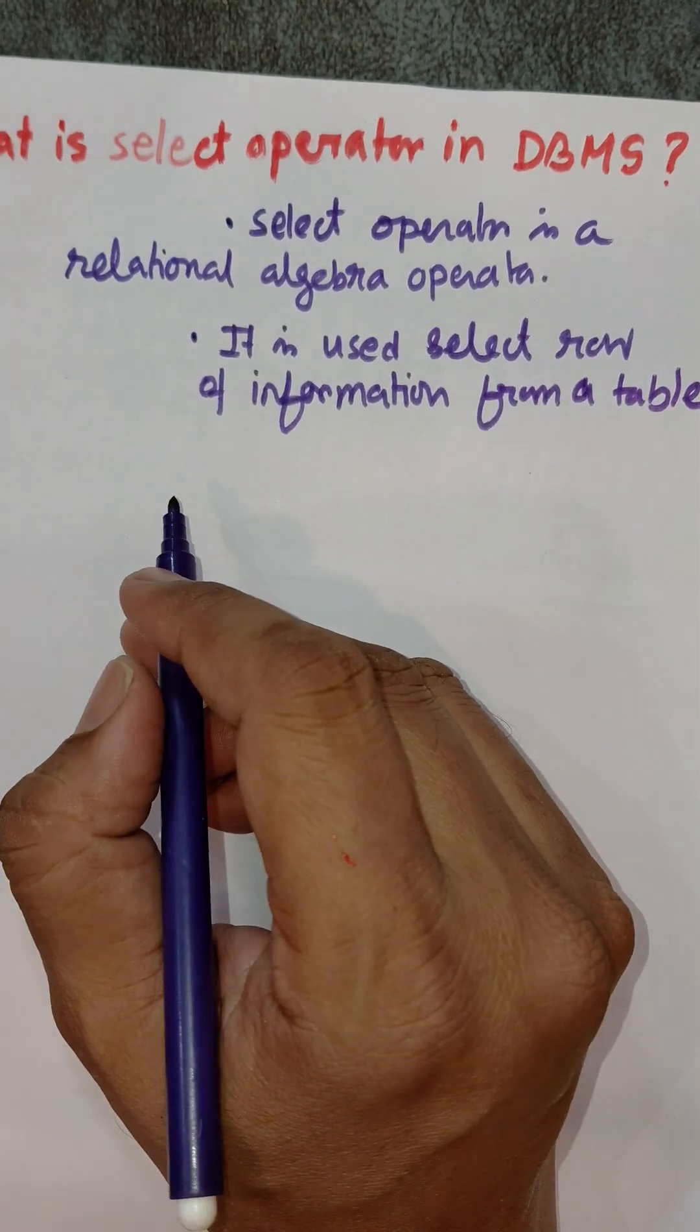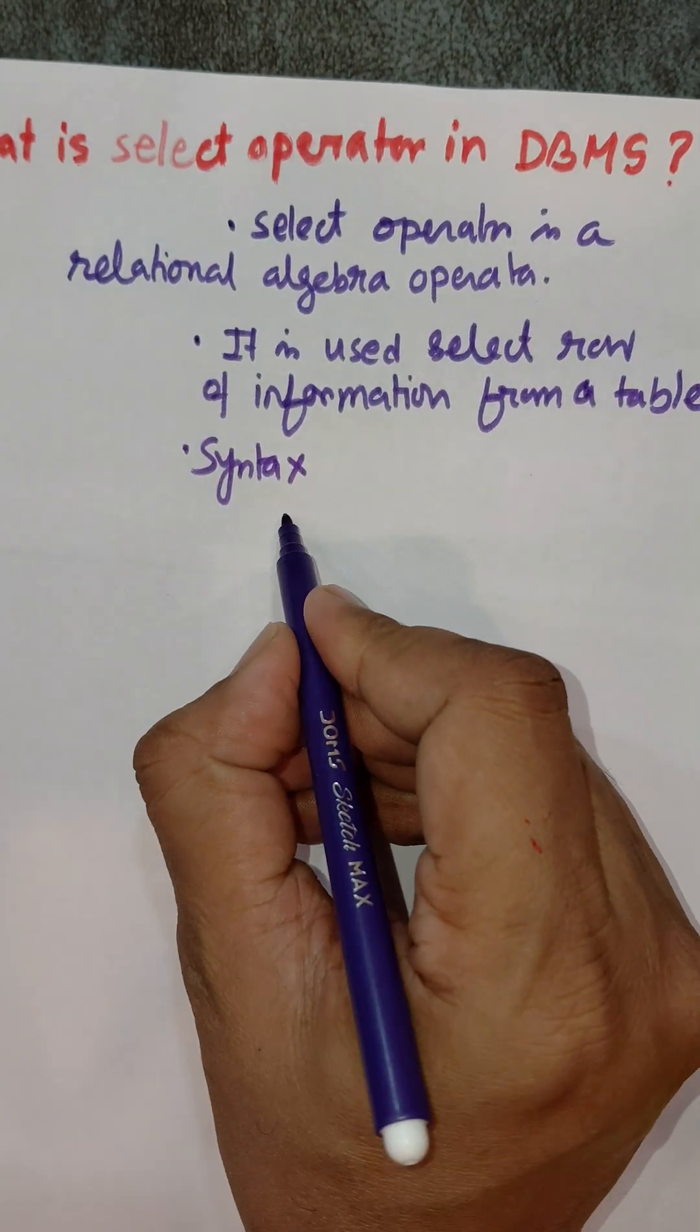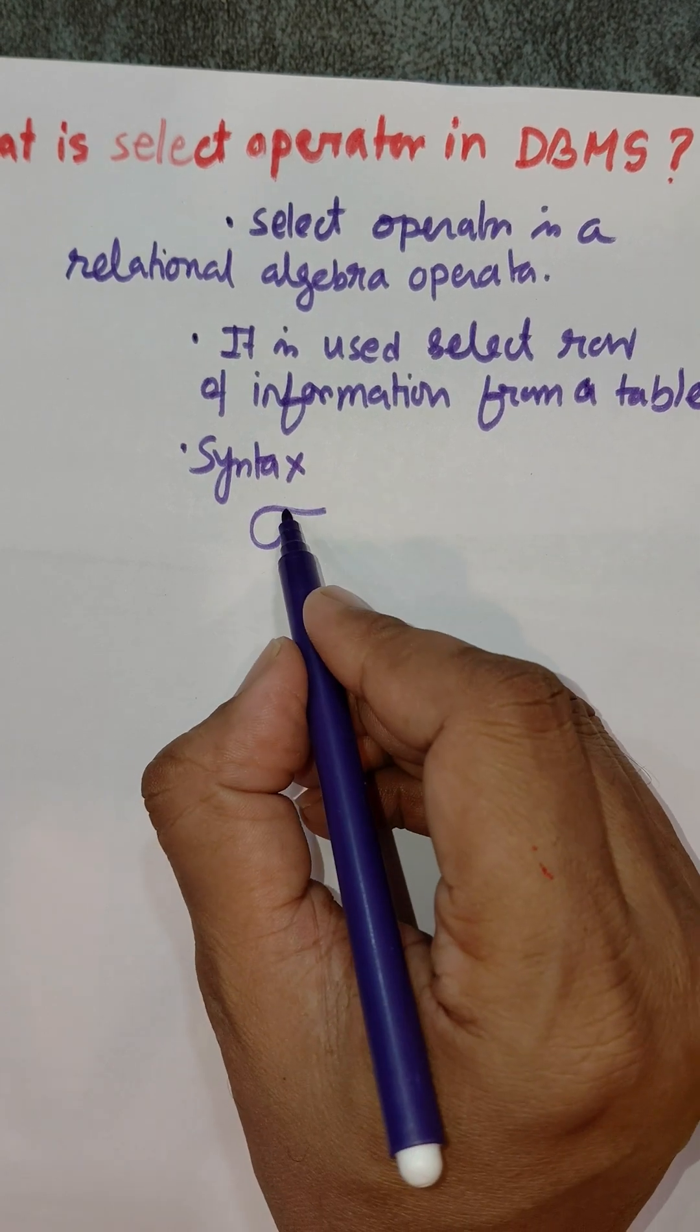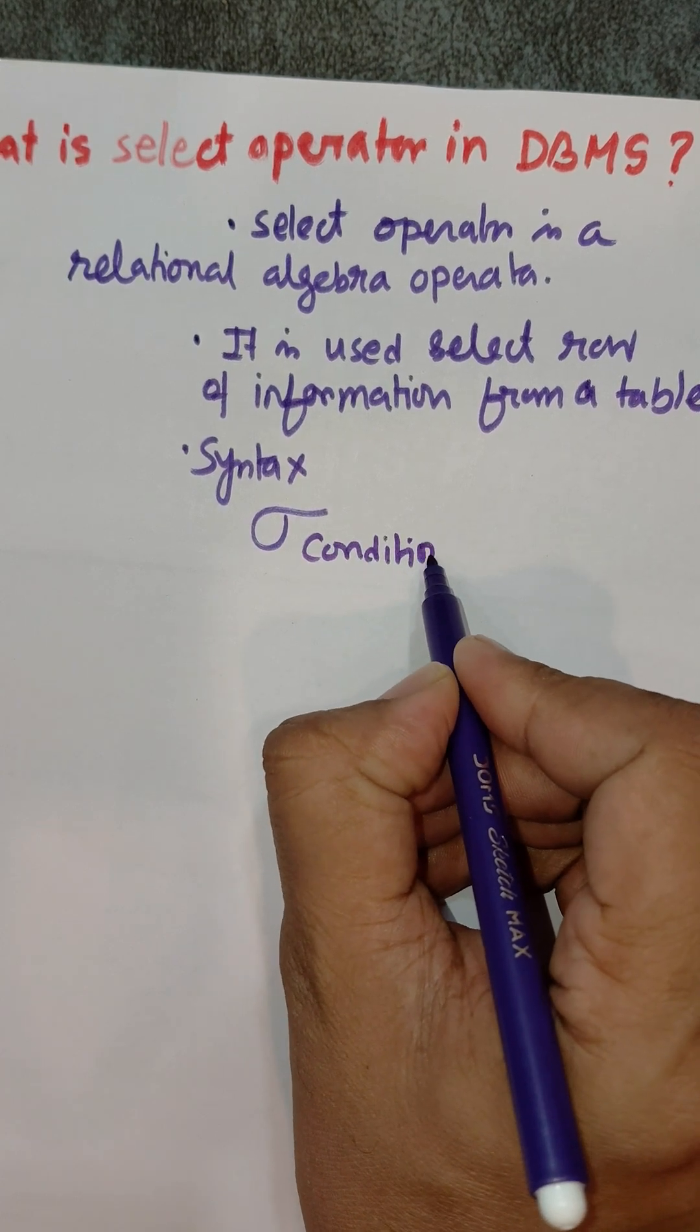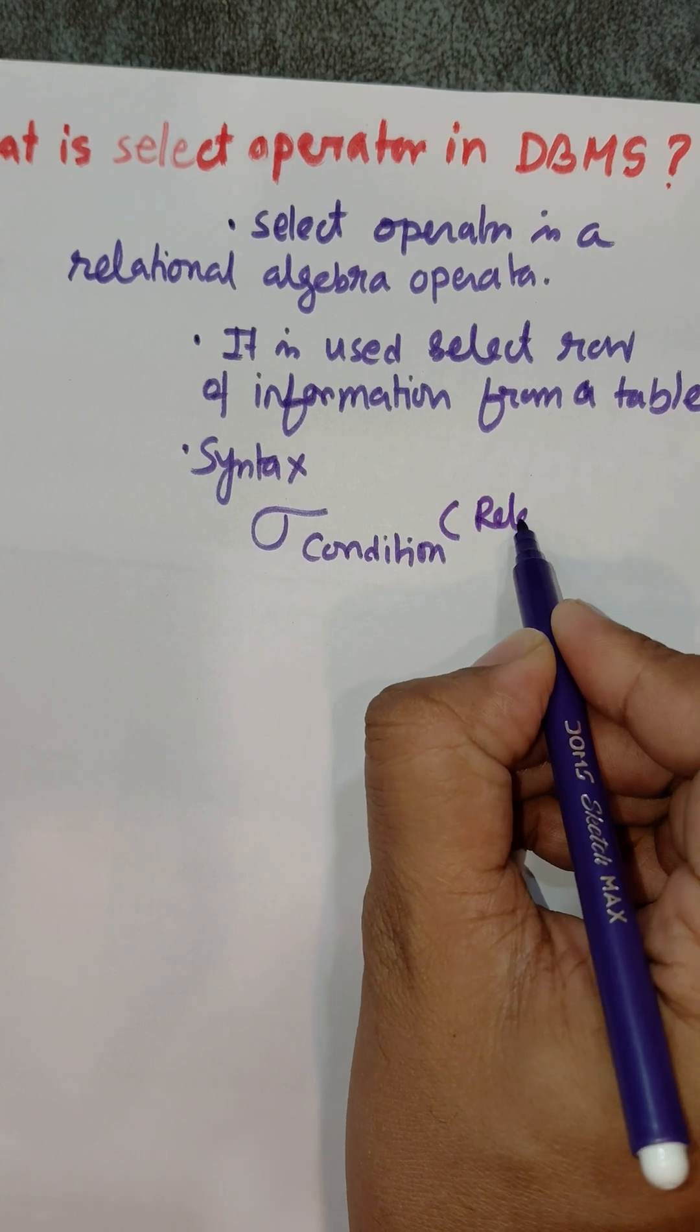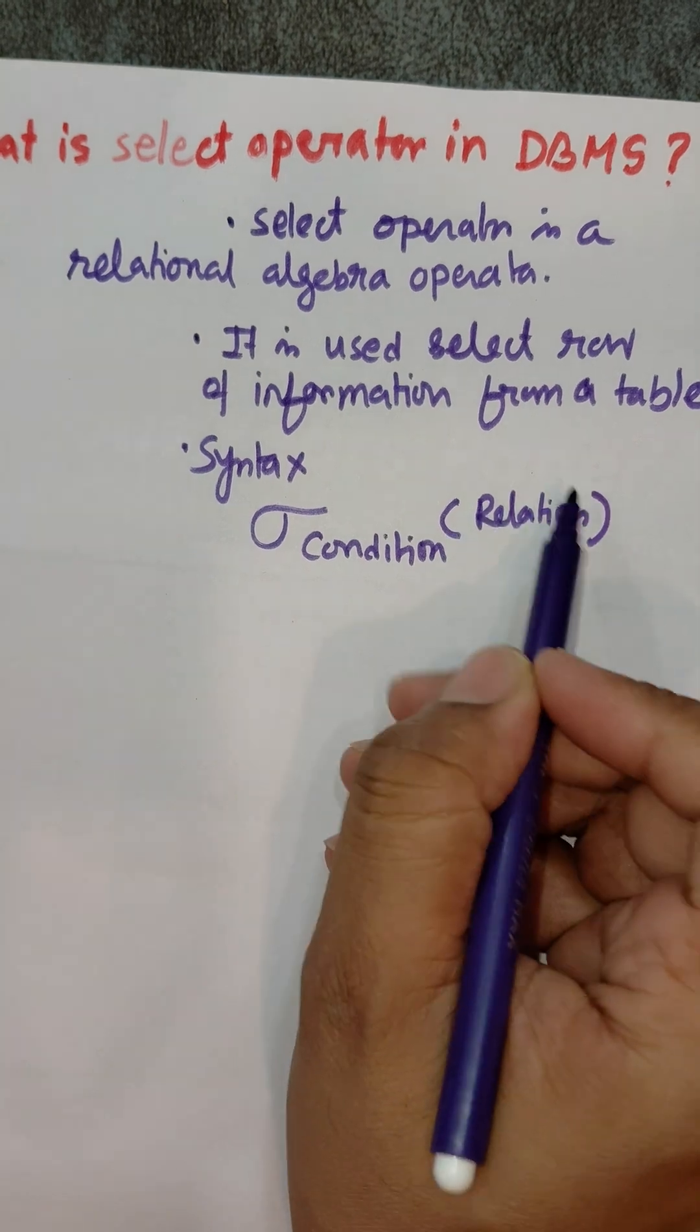Syntax: Sigma - it is denoted by Sigma. We need to write the condition here and the relational table from where we need to select the information. This is the name of the table and this is the condition.